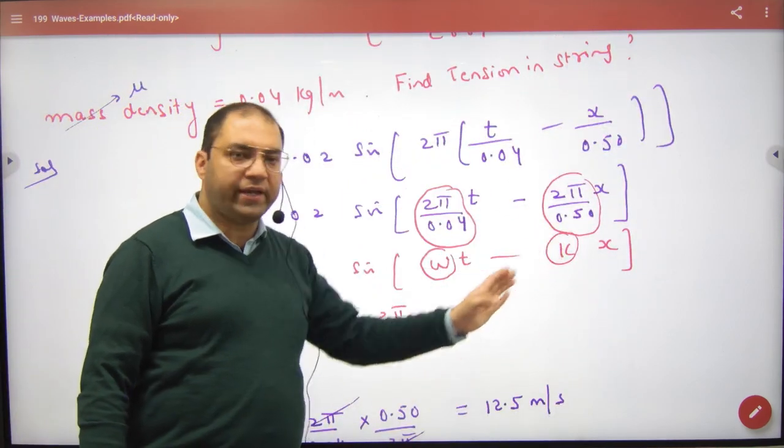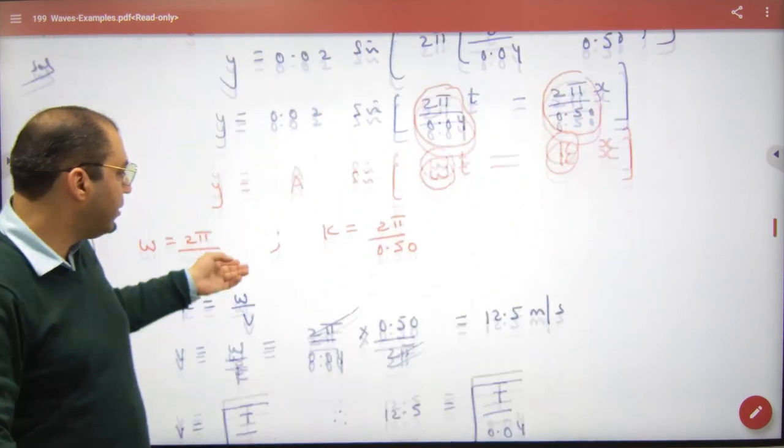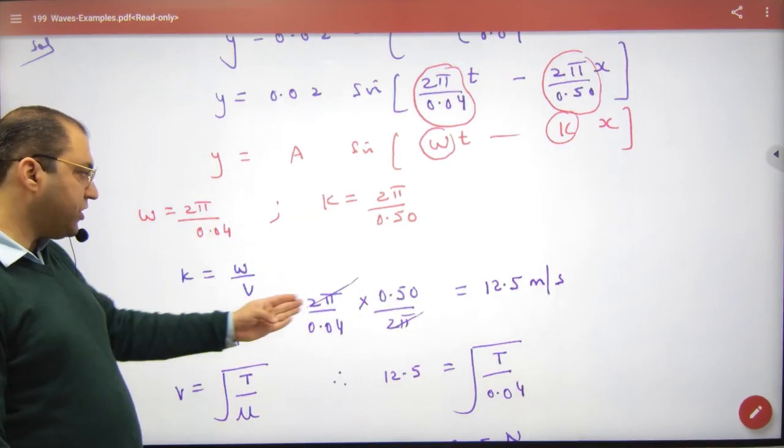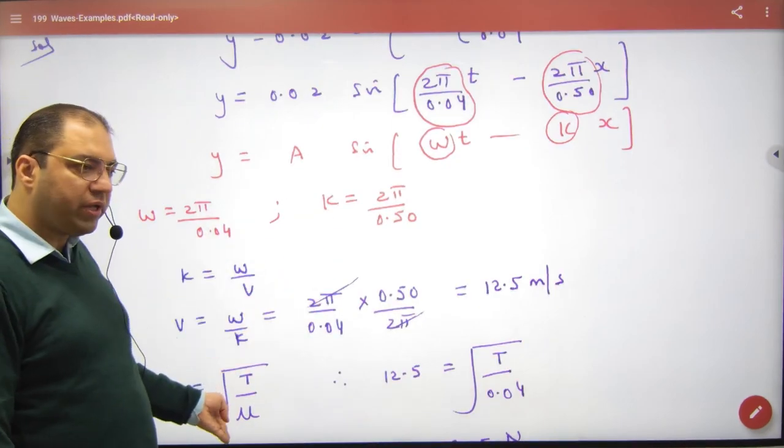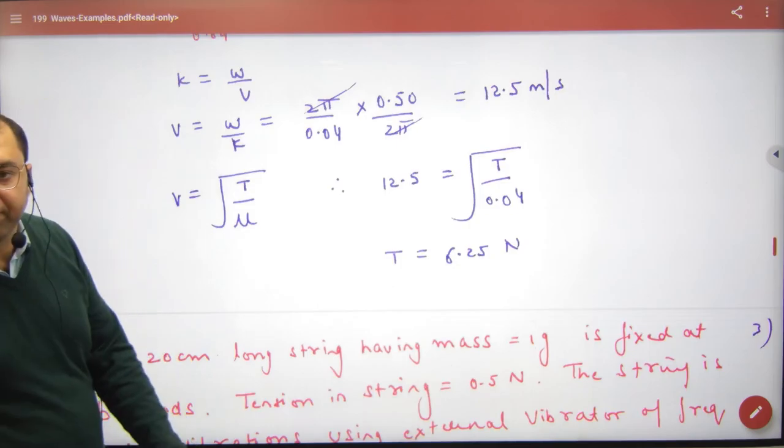2pi is multiplied by omega t minus kx. Here we have k and omega. From these, velocity equals omega by k, which equals root T by mu. From here, the tension value can be calculated. Easy question. Thank you.